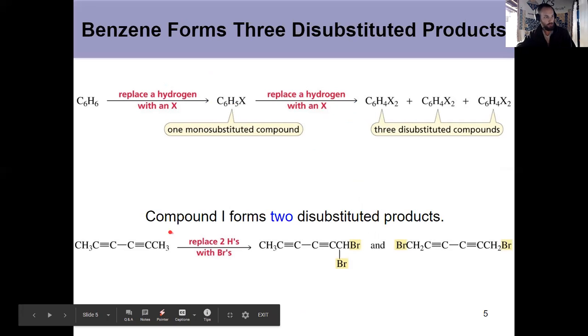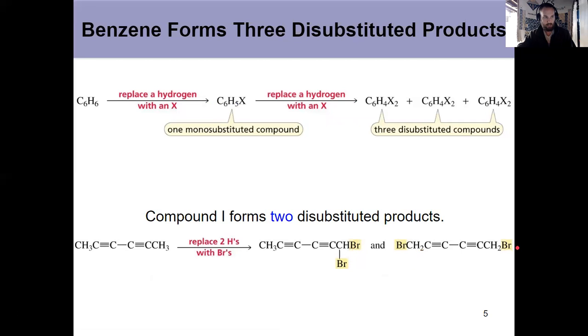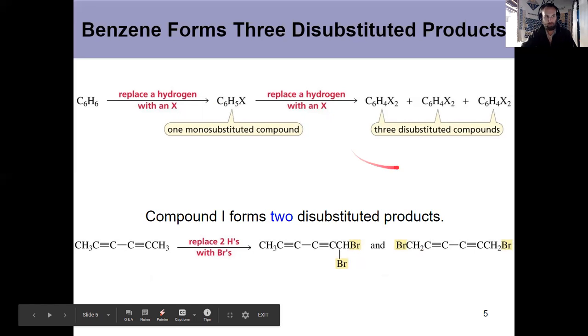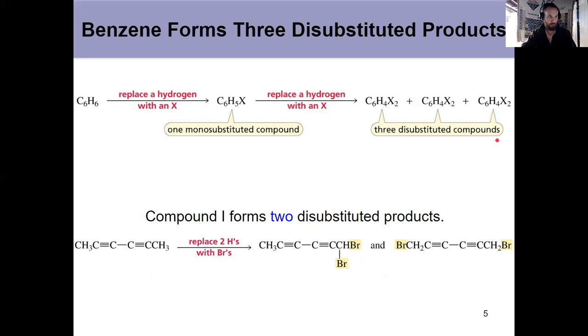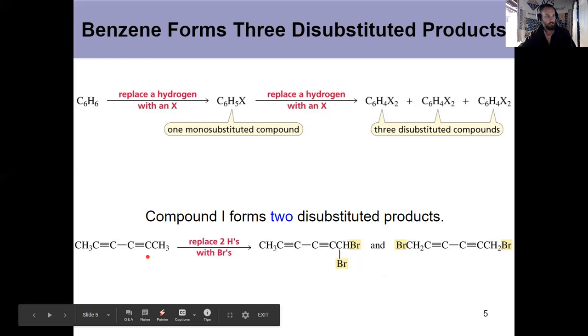But the disubstituted compounds throw some trouble into those structures. Because if I take the first proposed structure and disubstitute it, I get different structures if there's one here, where they're both on the same end or on opposite ends. So that's two, but remember that benzene forms three different disubstituted compounds. So that means that this compound cannot be the correct structure of benzene.